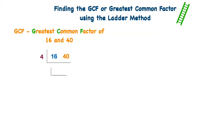Now I'm going to continue down my ladder by drawing another L. Inside this L, I write the other factor that when multiplied by 4 gives me 16, and also the other factor that when multiplied by 4 gives me 40. So 4 times 4 gives me 16, and 4 times 10 gives me 40. Then I look at 4 and 10 and think — what is a shared factor of 4 and 10? And that would be 2.